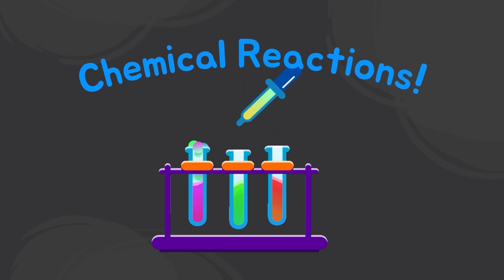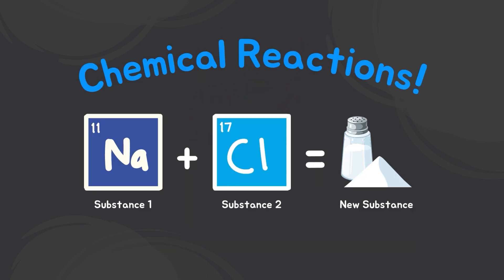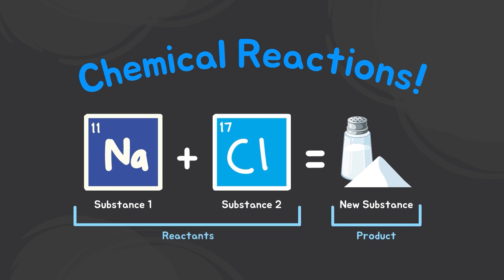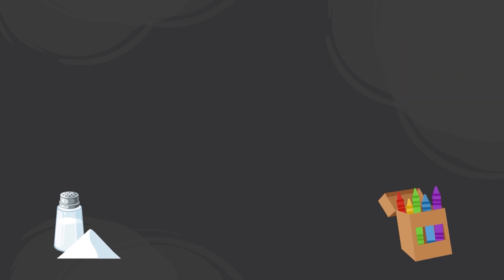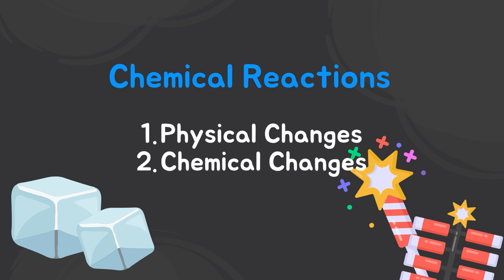Now that we know all of the background information, let's finally move on to the understanding of what chemical reactions really are. Chemical reactions are when two or more substances go through a reaction in order to create a new substance. The final product usually has different properties than the original substances. The substances used for the reaction are called reactants. We want to make use of the products that come from chemical reactions. Some candies are created using chemical reactions, and things we use every day such as paint, salt, and crayons are also made with the help of chemical reactions.